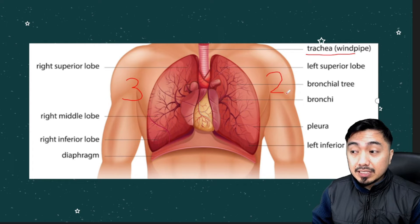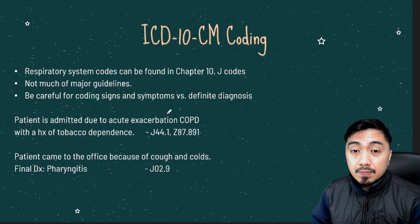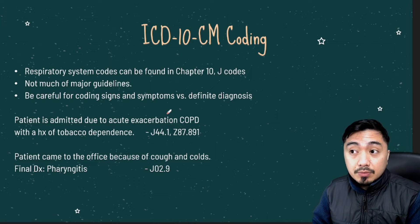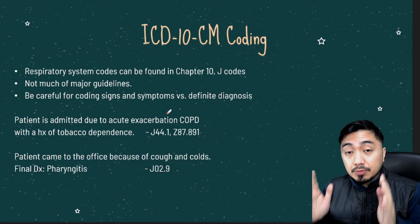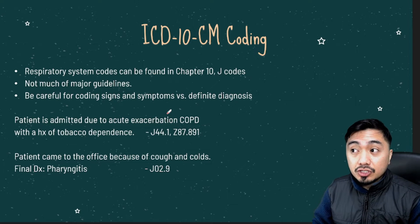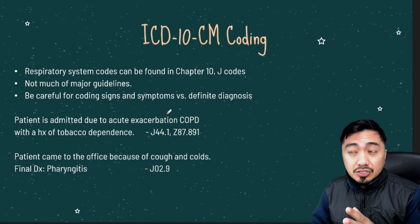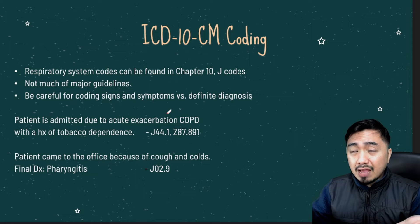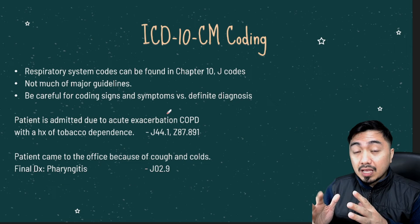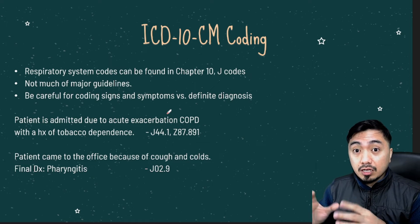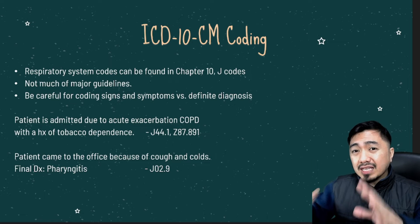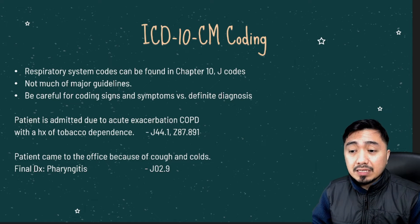Let's now proceed to ICD-10 coding. A few guidelines for respiratory system coding: respiratory system conditions can be found in Chapter 10, which are the J codes. You don't have to code the signs and symptoms in conjunction with the definitive diagnosis, unless those signs and symptoms are not part of the integral disease process. Overall, ICD-10 coding for the respiratory system is quite easy.